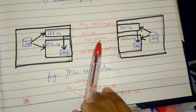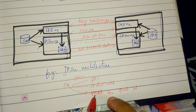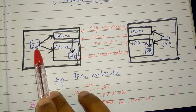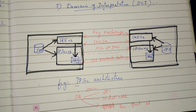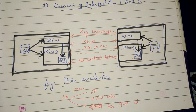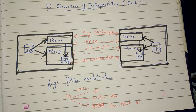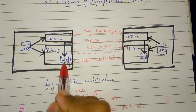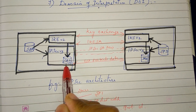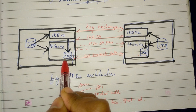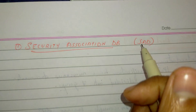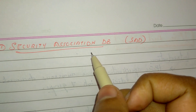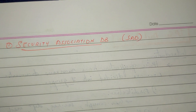The Security Association Database is called SAD. The Security Policy Database is called SPD. Let's go to the Security Association Database — in IPsec version 3, this is called the SAD.